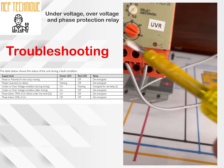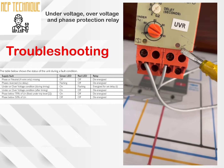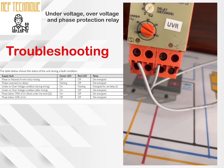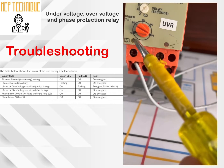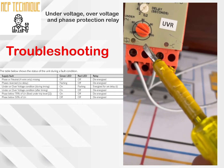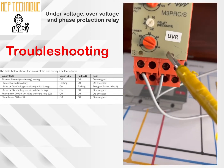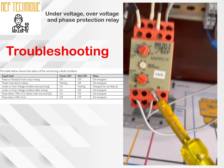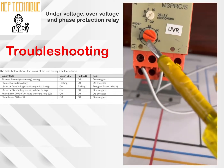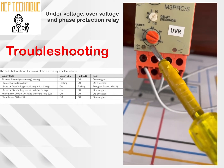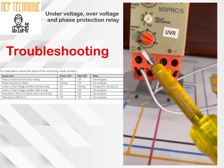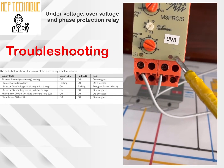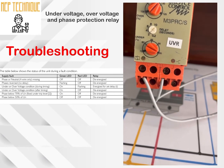Now we will discuss how to troubleshoot this relay. You can see there are two indication lamps: green and red. We can identify the failure of this relay by checking these indicator lamps. If a phase or neutral is missing, both green and red indicator lamps will be in the OFF position. If the phase sequence changes, the green indication will be flashing and the red indication will be OFF. During under voltage, over voltage, or phase failure conditions, the red indication lamp will be ON and the green indication lamp will be OFF.